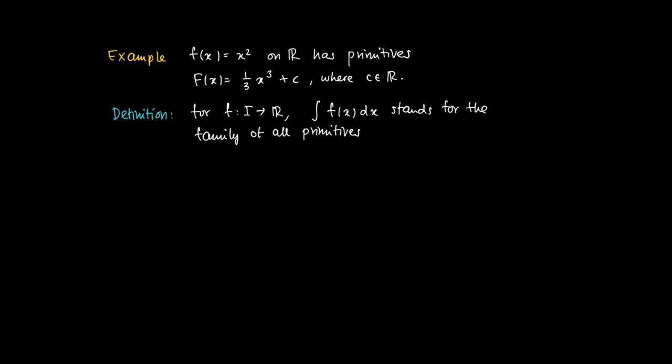So it's not one function. If you see notation like this, we indicate the class of all primitives for f on the interval. The class of all primitives for x² equals ⅓x³ + c.